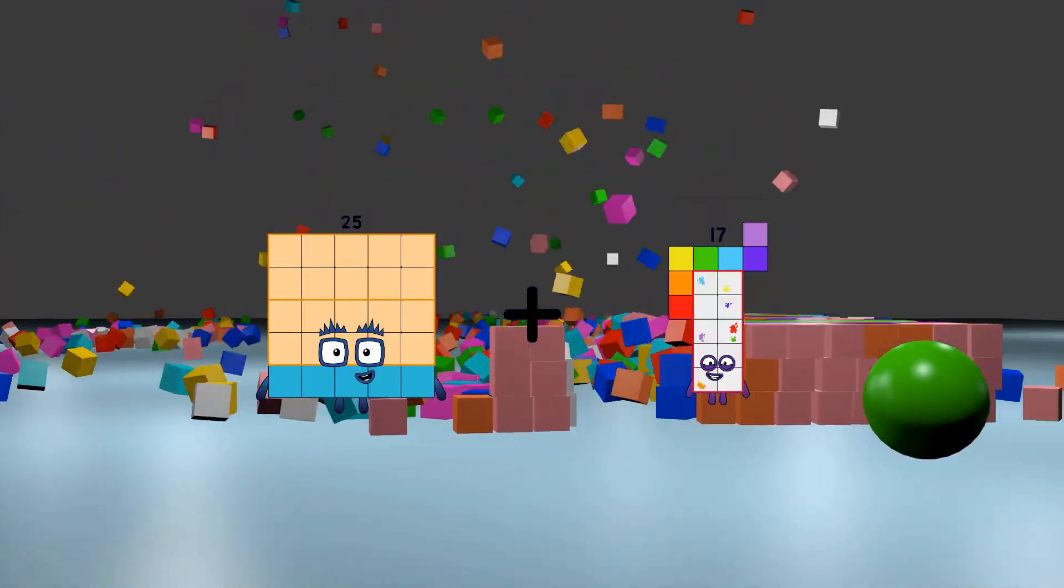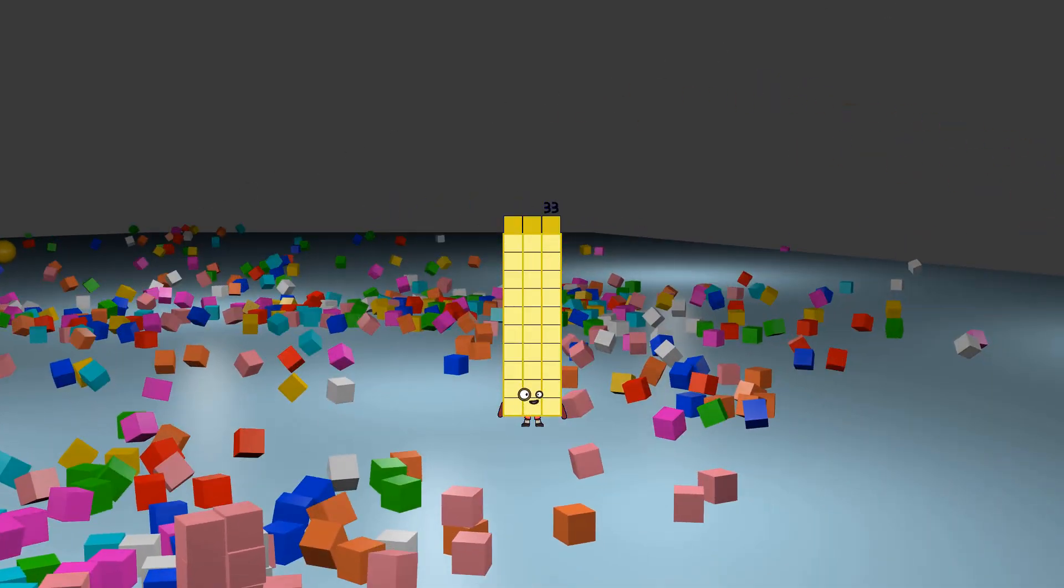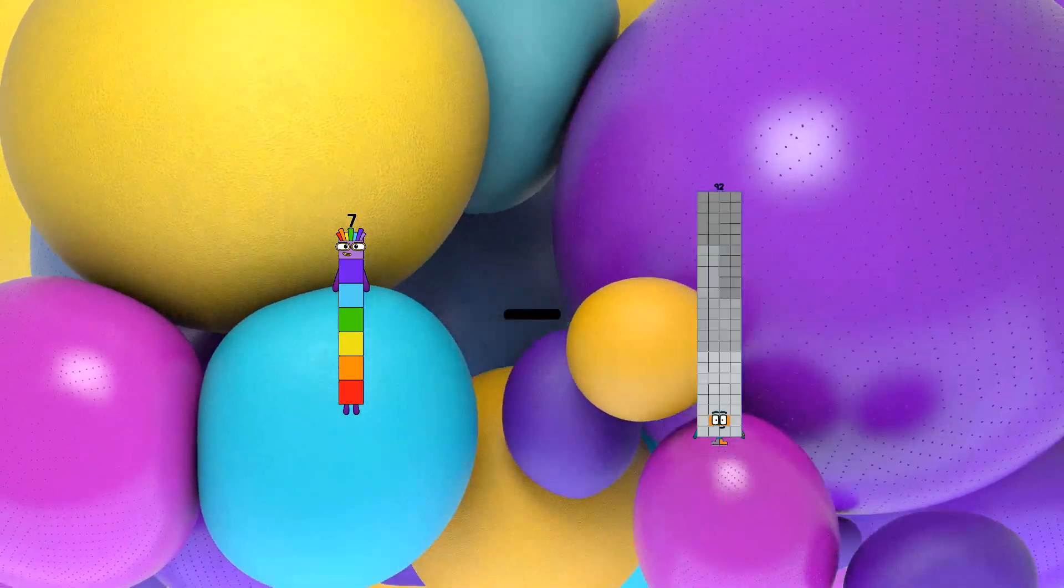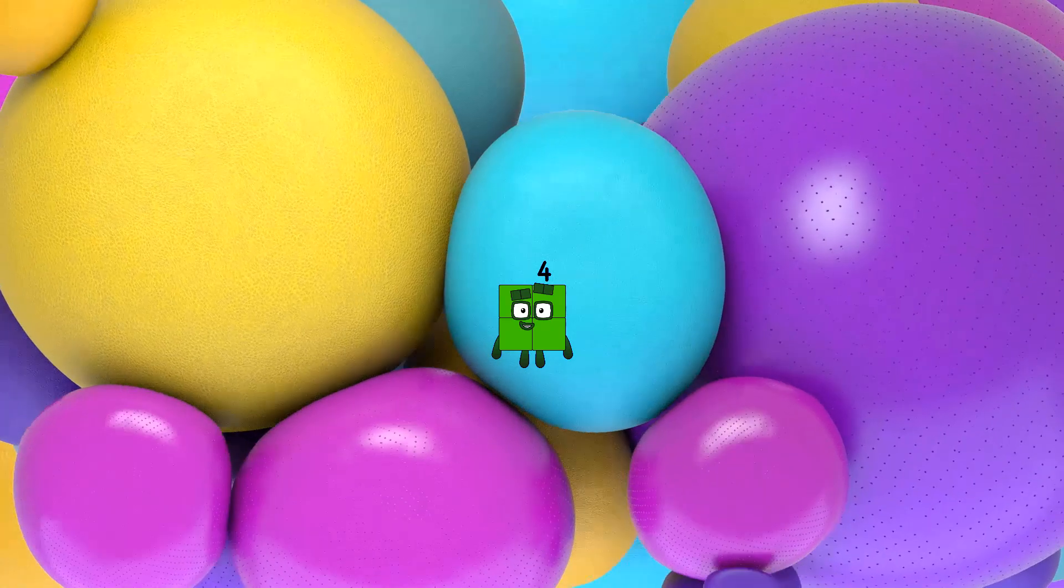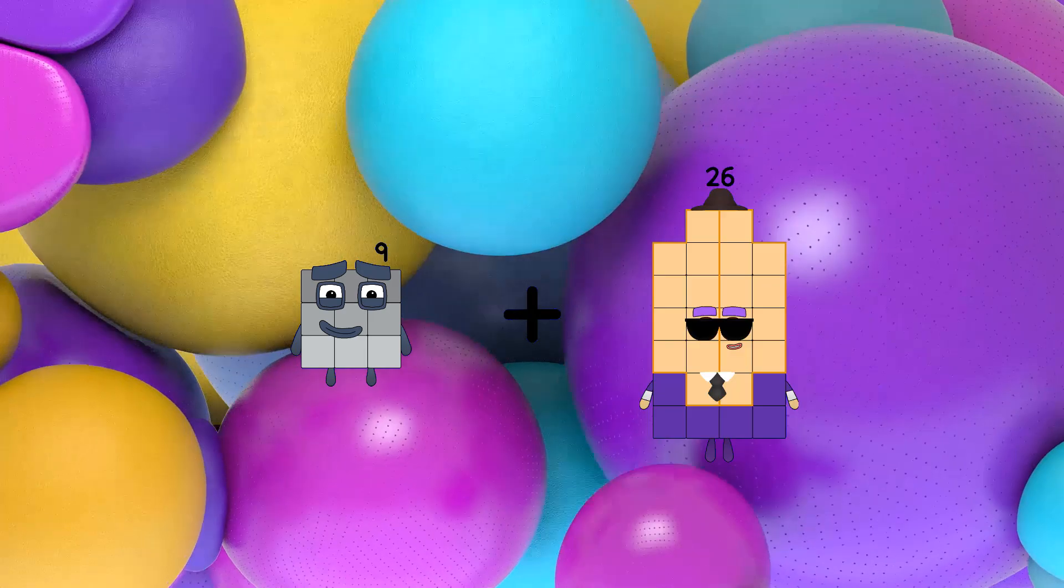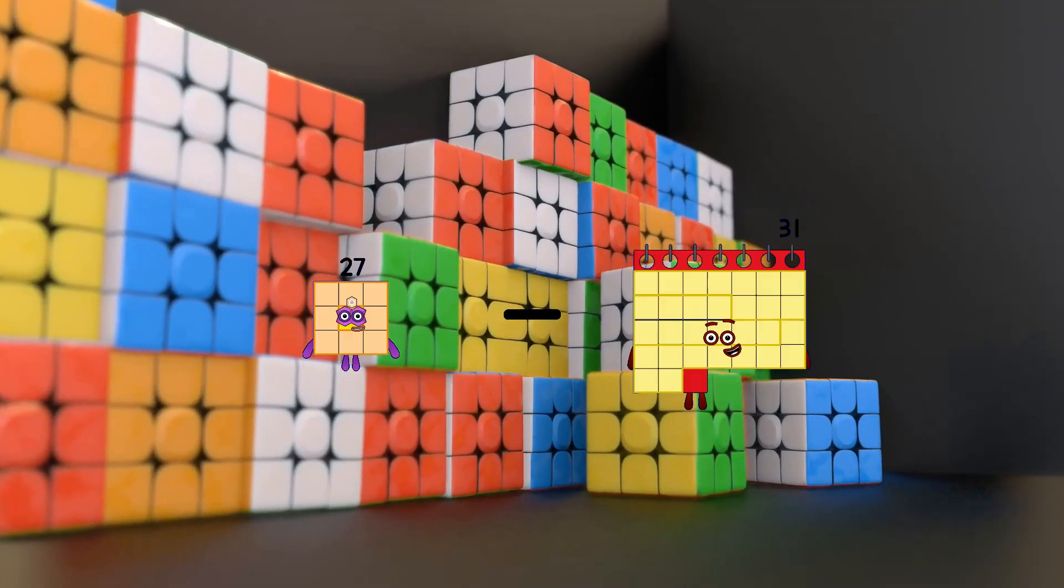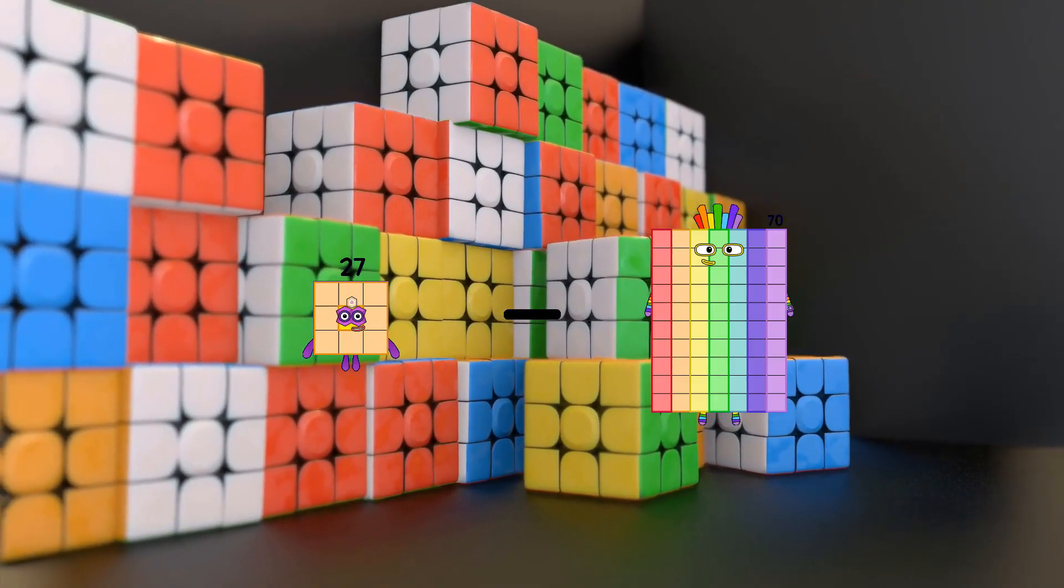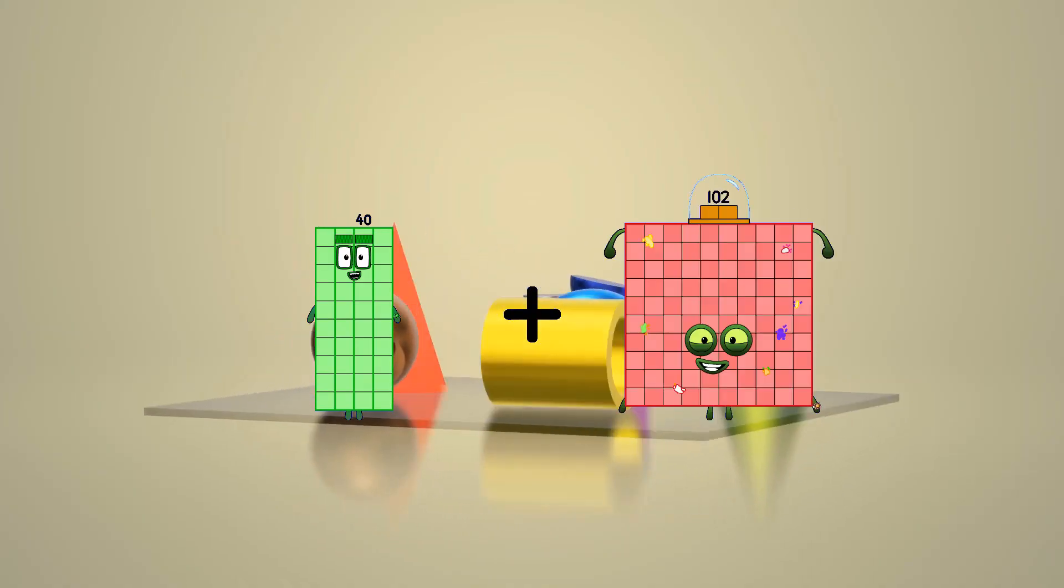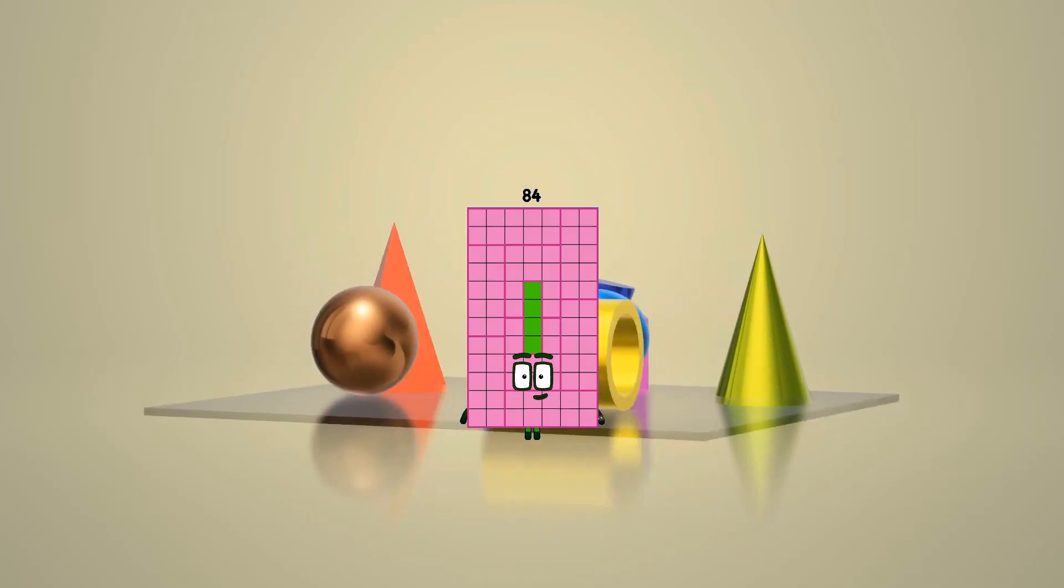25 plus 8 equals 33. 7 minus 3 equals 4, 9 plus 5 equals 14. 27 minus 11 equals 16, 40 plus 44 equals 84.